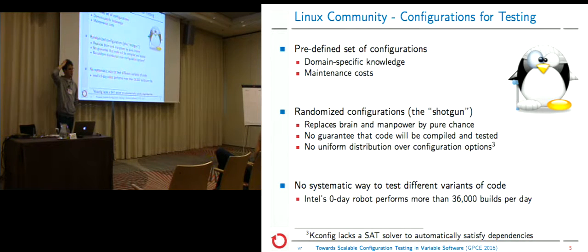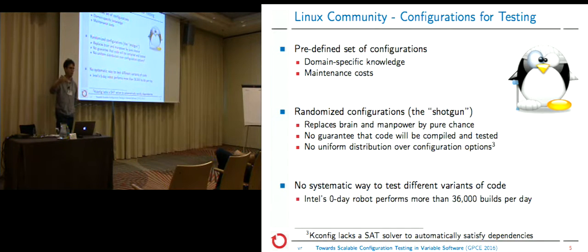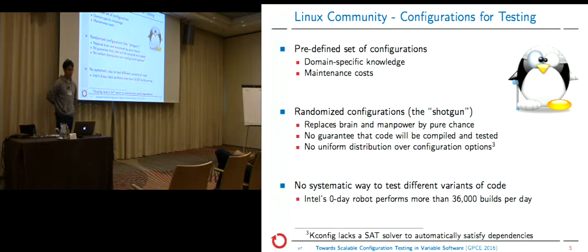This is more a technical problem because kconfig — the configuration system in Linux — has no SAT solver. There is a predefined path, and at every possible hop a coin is flipped to assign a certain value, so there is a high bias inside. Certainly both approaches are not systematic. And as there is nothing systematic available for the Linux community at the moment, it scales poorly.